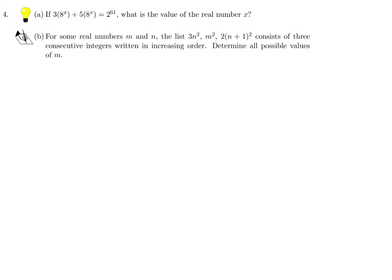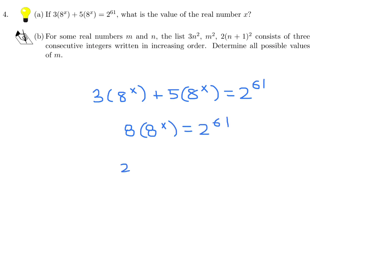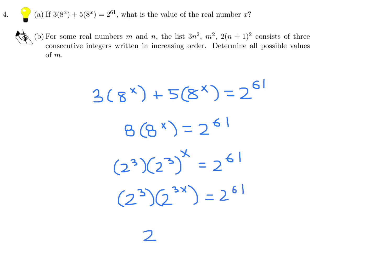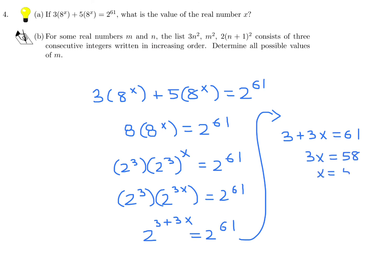If 3 times 8 to the power of X plus 5 times 8 to the power of X equals 2 to the power of 61, what is the value of X? Collecting like terms gives 8 times 8 to the power of X equals 2 to the 61st. Since 8 equals 2 cubed, we get 2 to the power of 3 plus 3X equals 2 to the 61st. So 3 plus 3X equals 61, meaning 3X equals 58 and X equals 58 over 3.